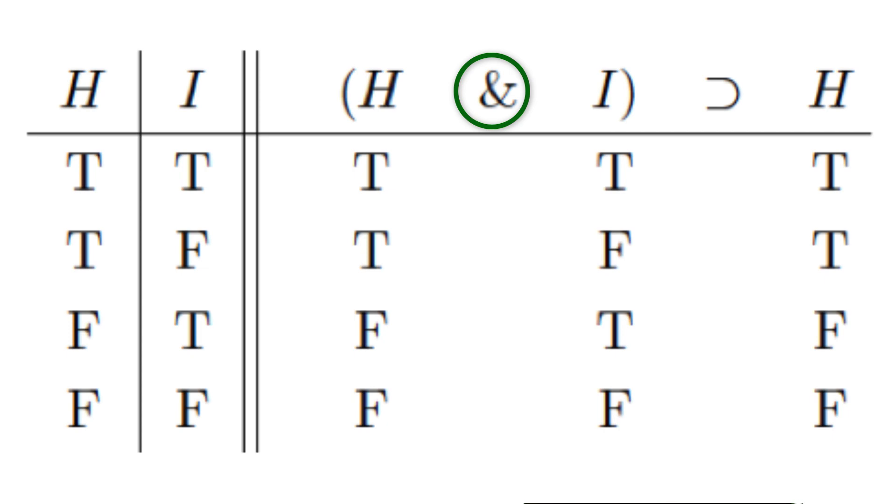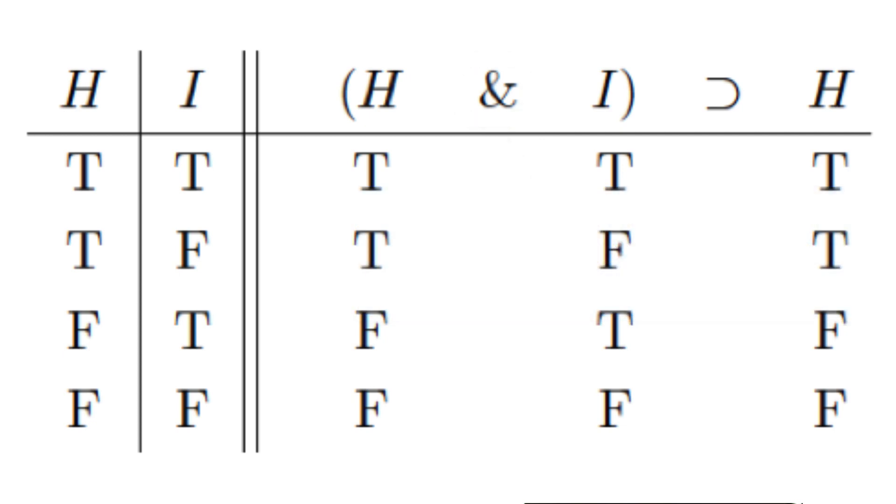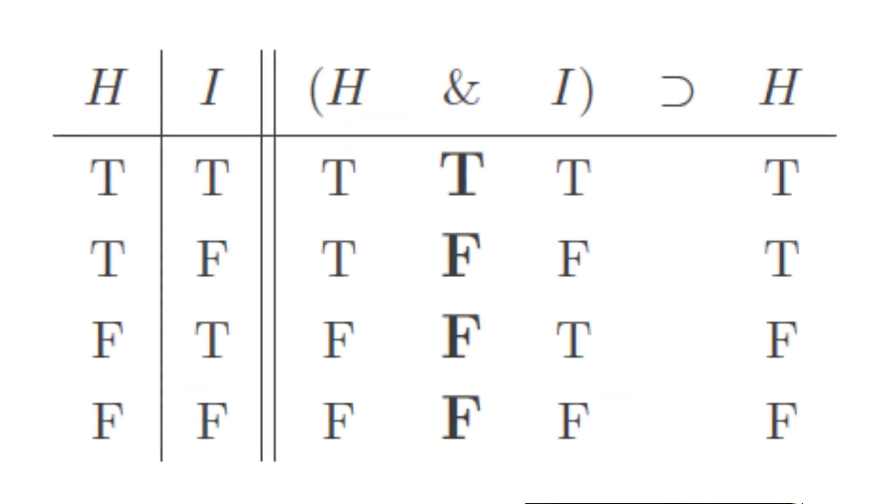We'll apply the rule for conjunction, which states that both conjuncts must be true in order for the conjunction as a whole to be true. That situation exists only in the first row, so we'll place a T beneath the ampersand in the first row and F's in each subsequent row, like this.